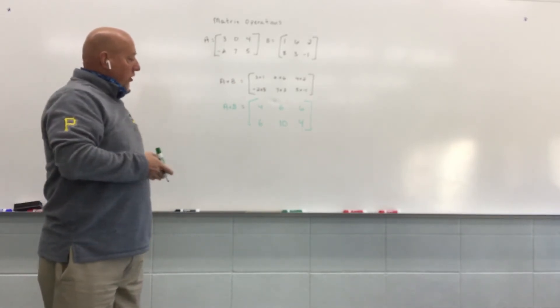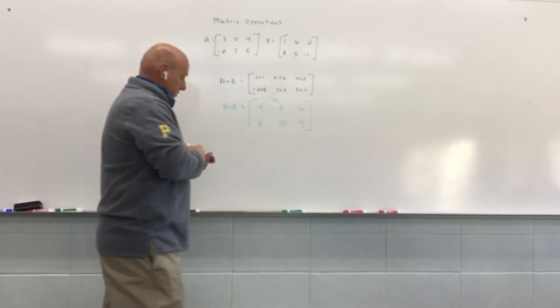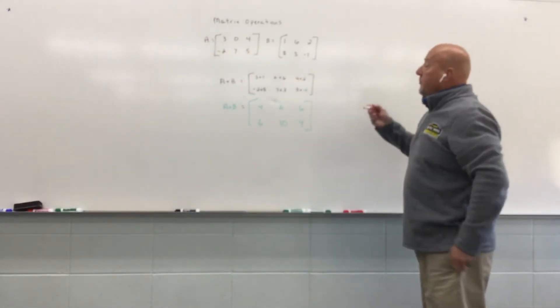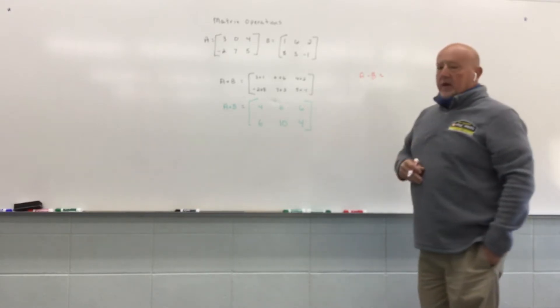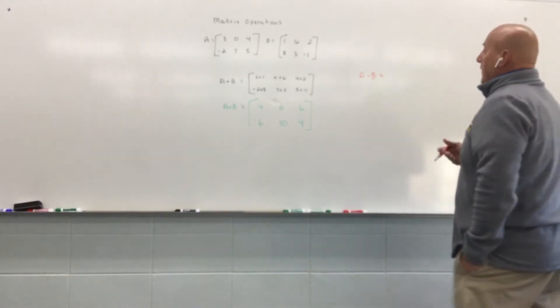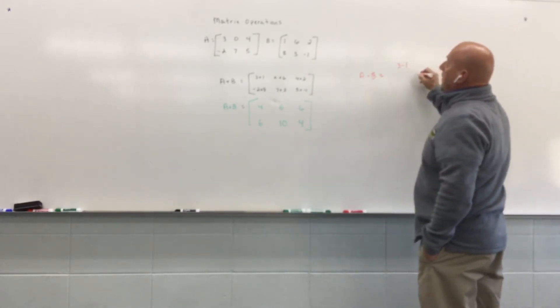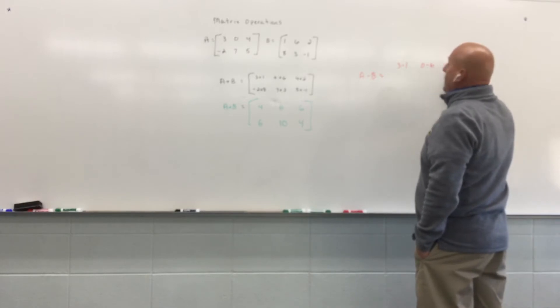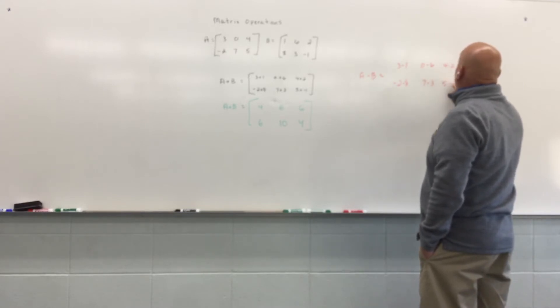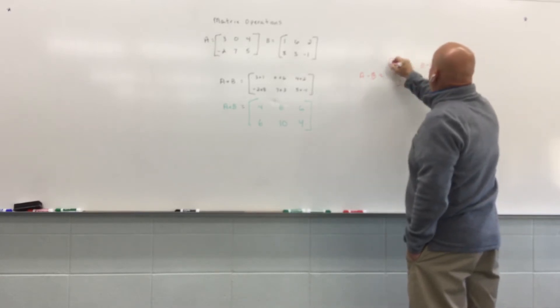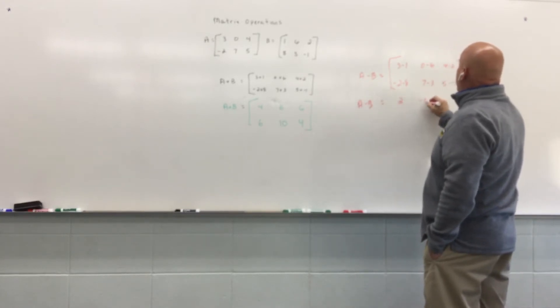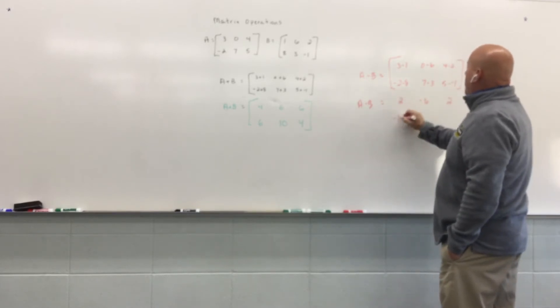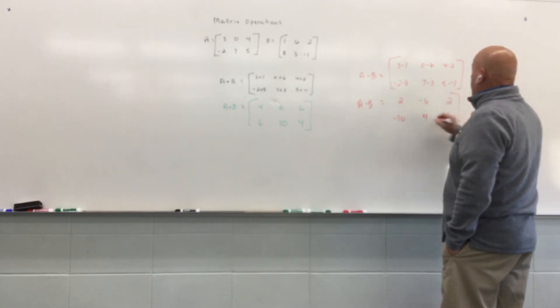We could also perform subtraction with those same two matrices since they have the same size. So if we wanted to subtract A minus B, again we're going to take the value that's in the same position, and it's going to be 3 minus 1, 0 minus 6, 4 minus 2, negative 2 minus 8, 7 minus 3, and 5 minus negative 1. And so the value of A minus B would be 2, negative 6, 2, negative 10, 4, and 6.